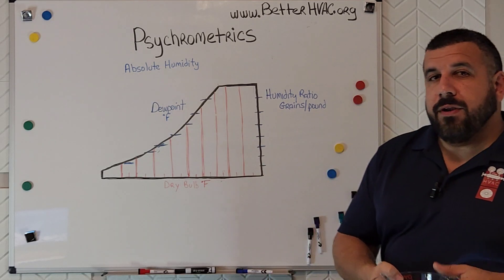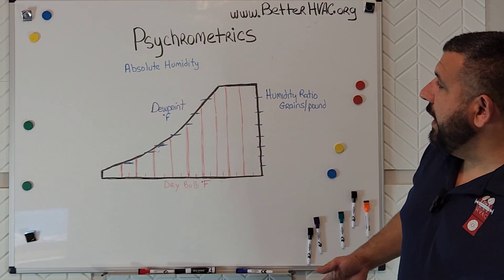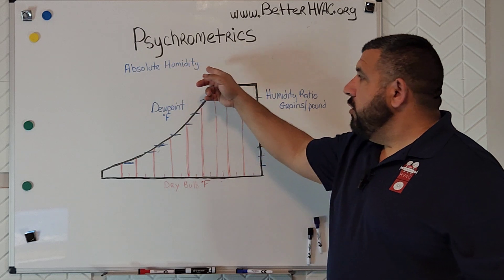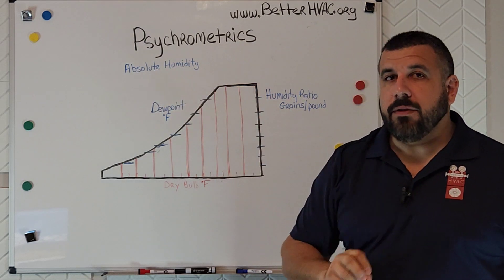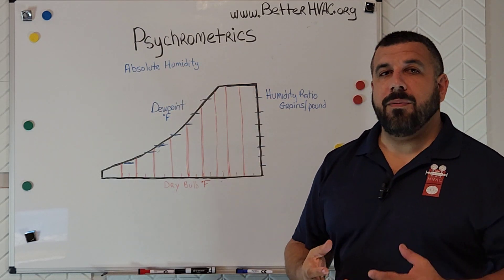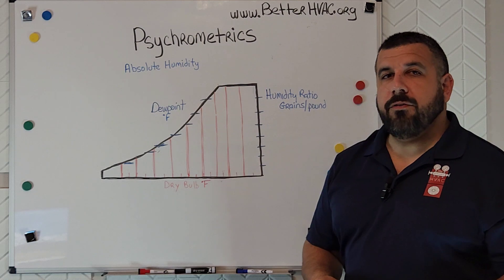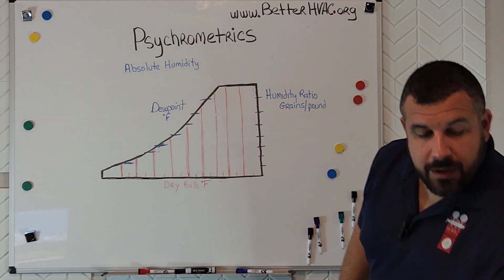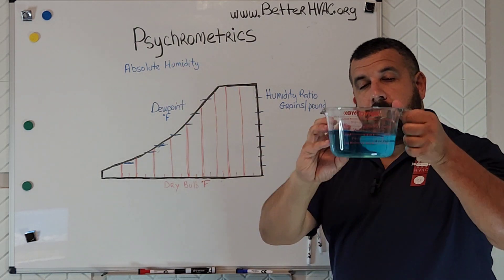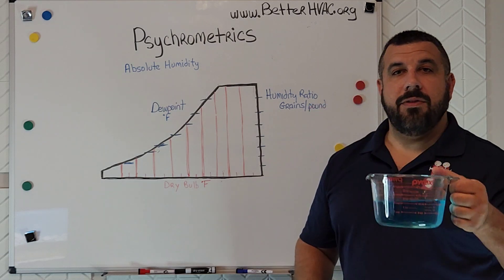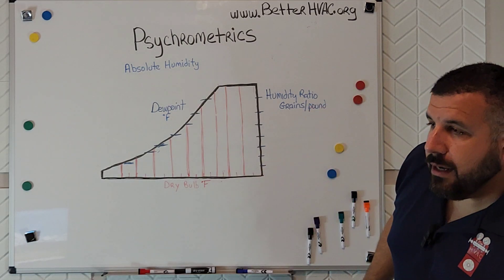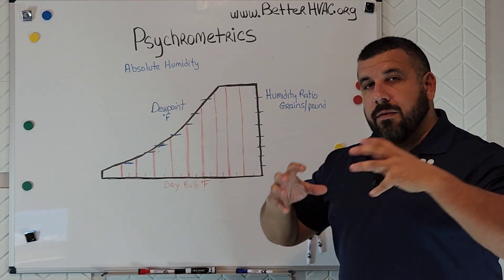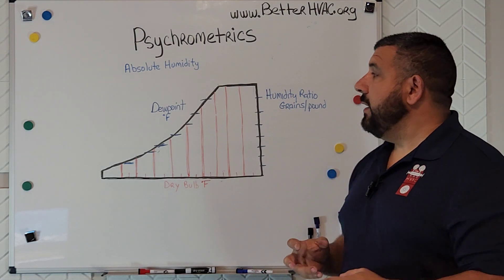Moisture is read in several different ways, but today we're going to talk about absolute humidity. That's different from relative humidity — you're probably more familiar with that, and we'll talk about relative humidity at another time. Absolute humidity measures how much moisture is absolutely in the air. It's not contingent on any other factor like temperature; it is literally how much moisture is in the air.